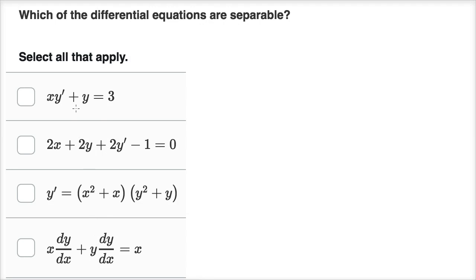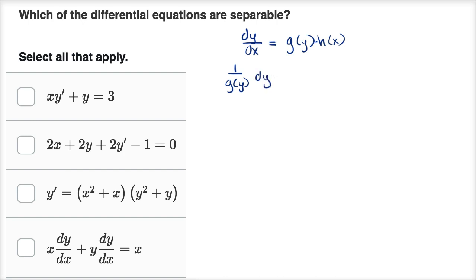The way I approach this is I try to solve for the derivative, and if dy/dx equals some function of y times some other function of x, then I say this is separable. I could rewrite this by dividing both sides by g(y), getting one over g(y) times dy equals h(x) dx. You go from the first equation to the second by dividing both sides by g(y) and multiplying by dx — then it's clear you have a separable equation and can integrate both sides. The key is to solve for the derivative and see if we can write it as the product of a function of y times a function of x.